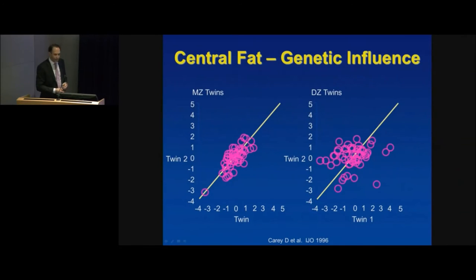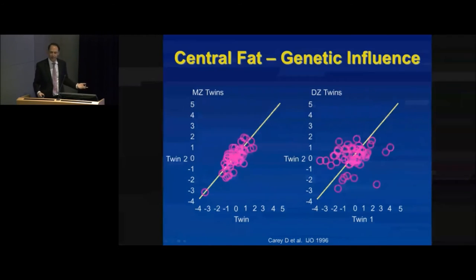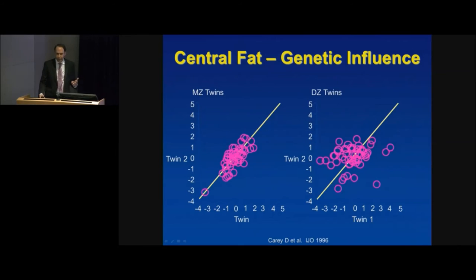Twin studies from the Garvan Institute highlight the genetic influences on central fat. The amount of fat in the central window is strongly genetically determined. Looking at identical versus non-identical twins, the line of fit is very tight in identical twins but shows a lot of scatter in non-identical twins — suggesting central fat is very strongly genetically governed. Understanding which genetic factors control fat distribution in that central window is one of the Garvan's key research goals.